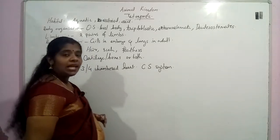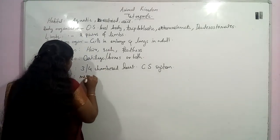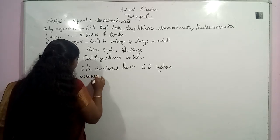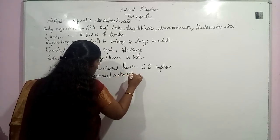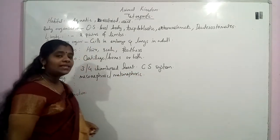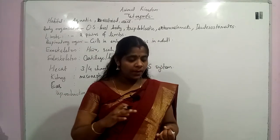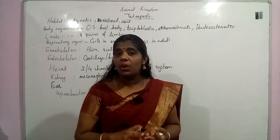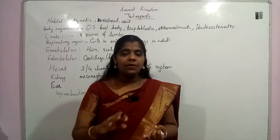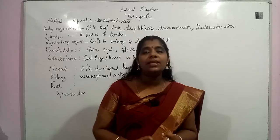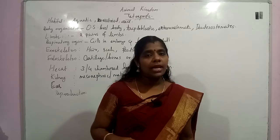The next feature is the kidney. Kidney present in this group of organisms is either mesonephric or metanephric. The excretory waste seen in this group may be ammonotelic, ureotelic, or uricotelic. Ammonia, urea, or uric acid can be eliminated. Some very few organisms are guanotelic also.